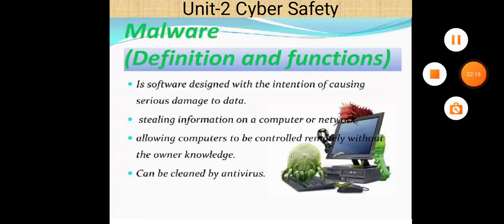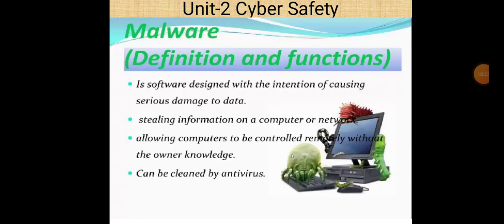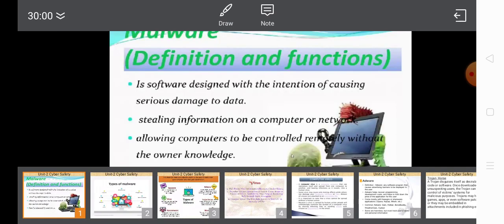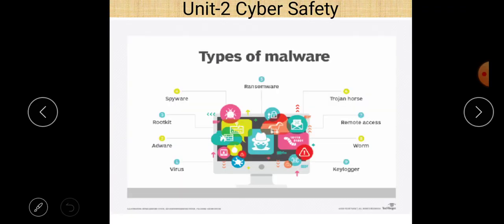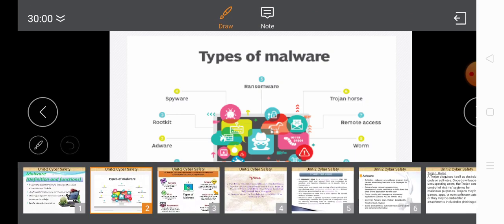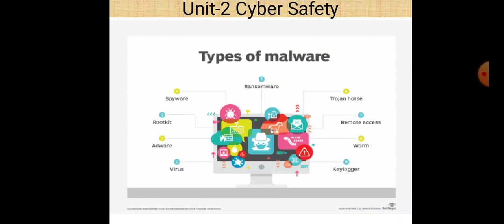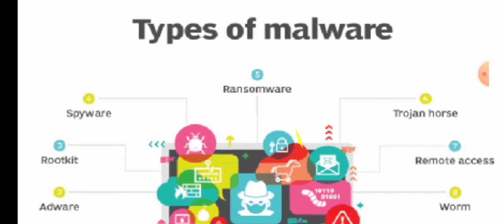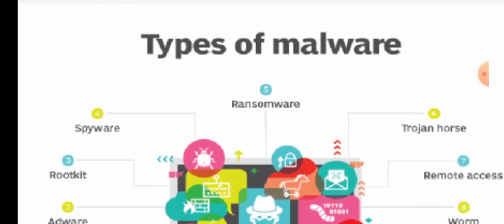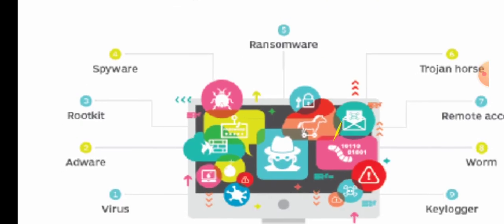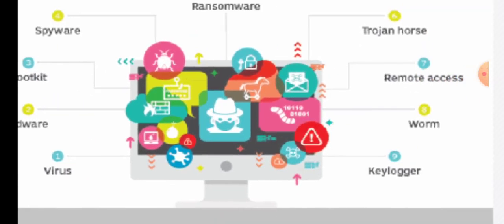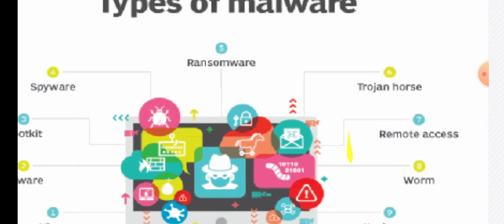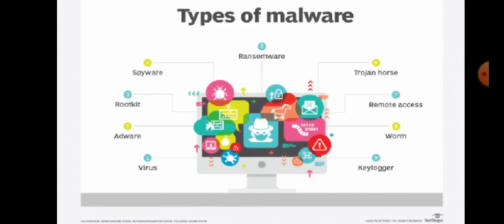Now it's time to discuss different types of Malware. You can easily see on the screen. These are the different types: Spyware, Ransomware, Rootkit, Adware, Virus, Keylogger, Worm, Remote Access, and Trojan Horse.